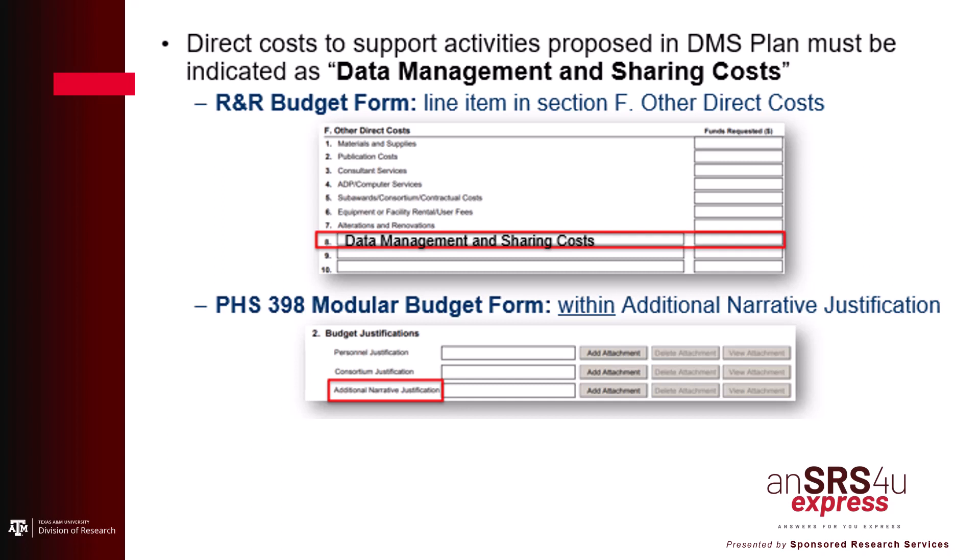If you have sub-awards, all DMS costs must be included as a single line item in the prime applicant's budget.